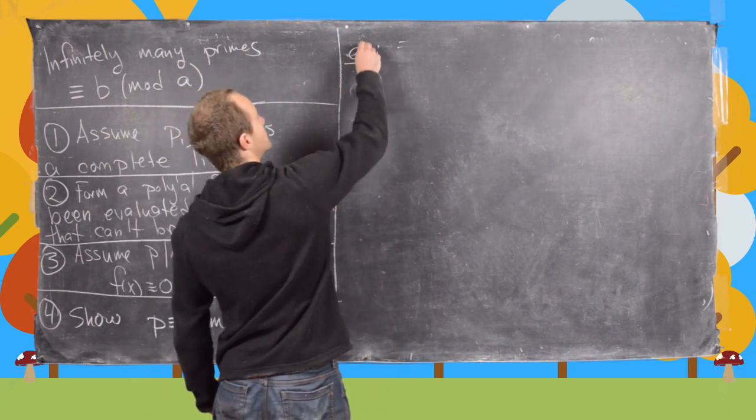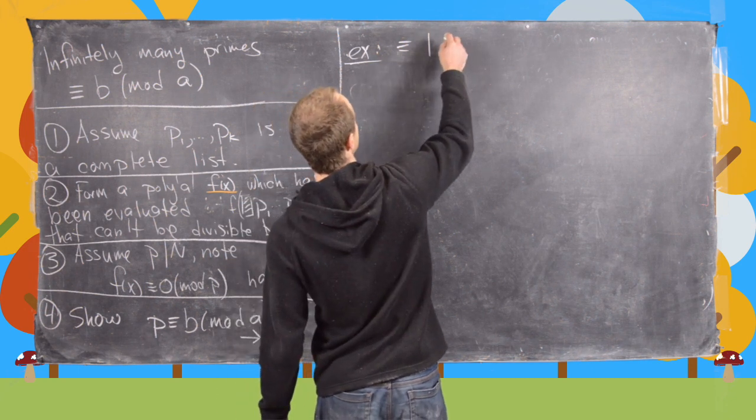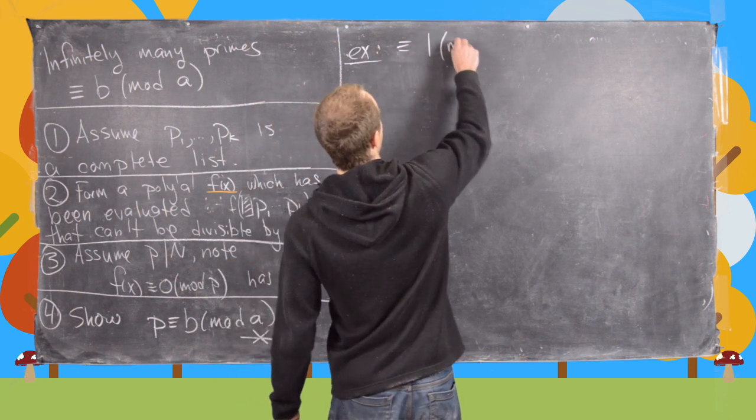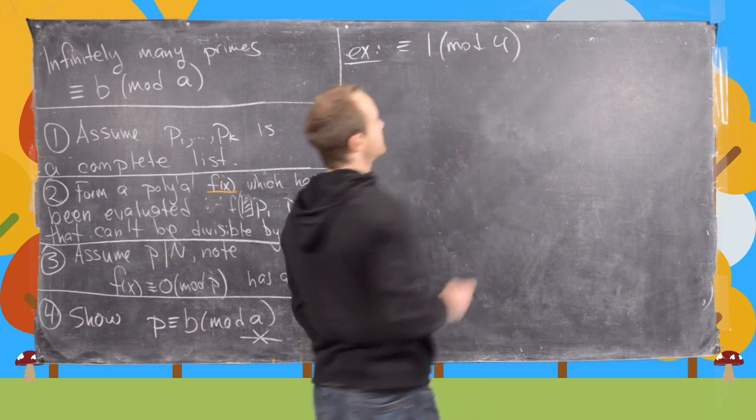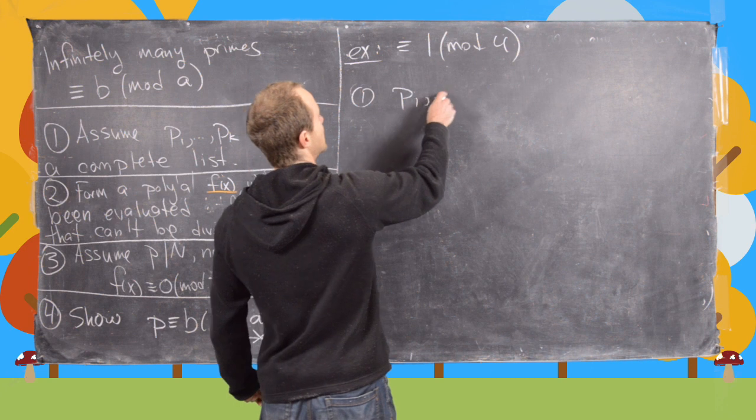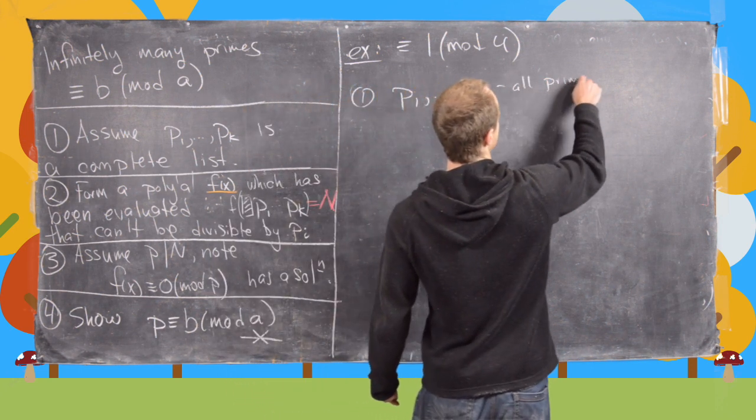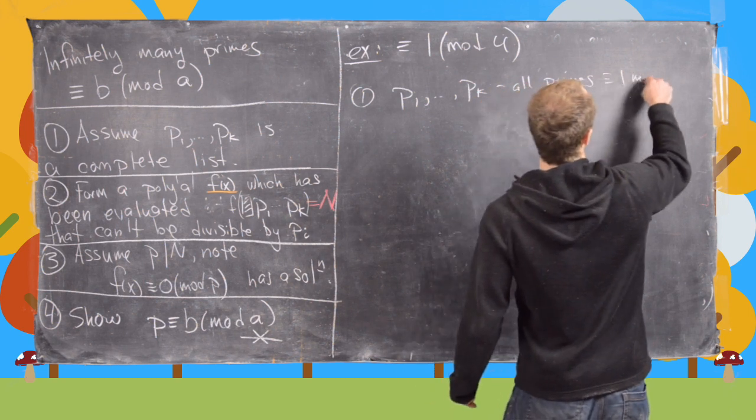So let's look at another example. Let's say we have congruent to 1 mod 4. So the first thing that we're going to do is suppose that these are all primes congruent to 1 mod 4.